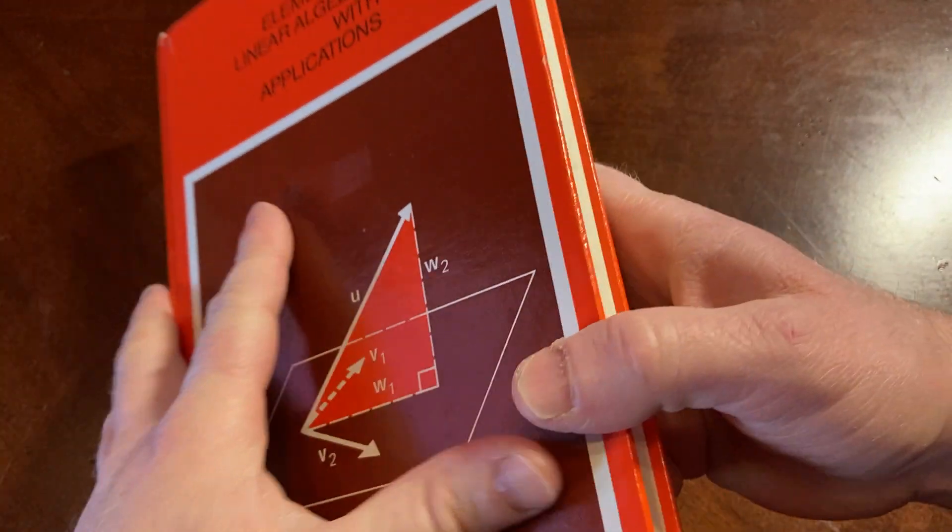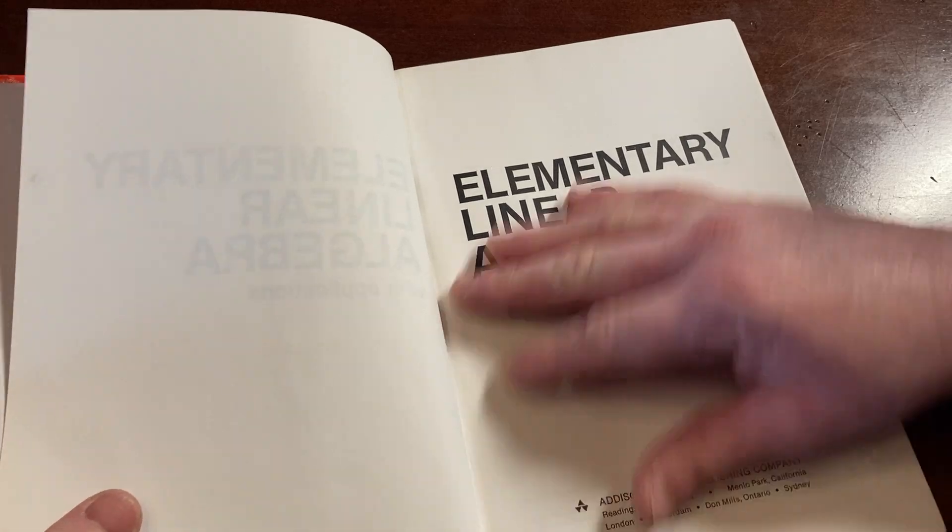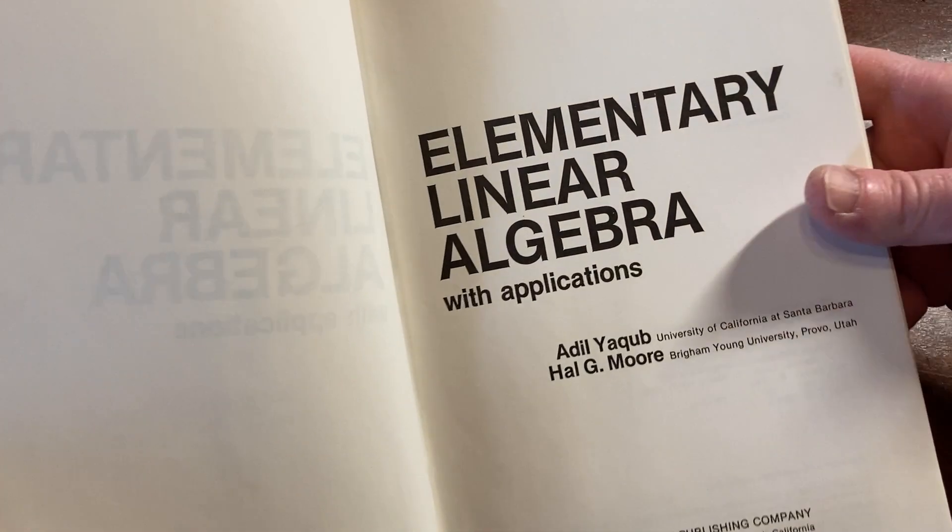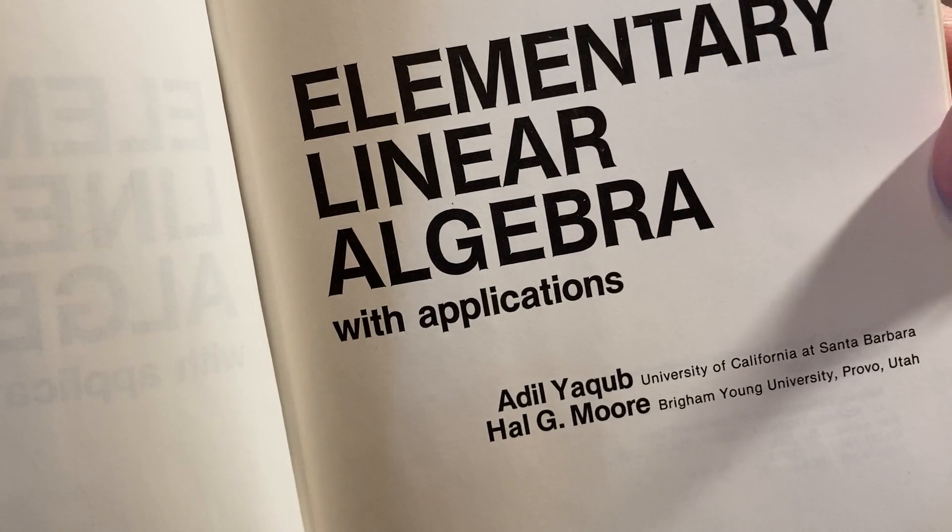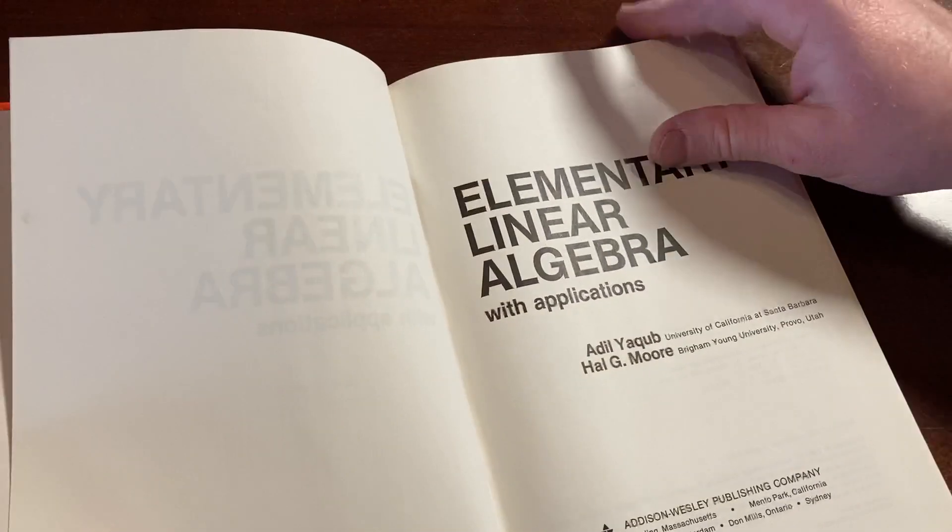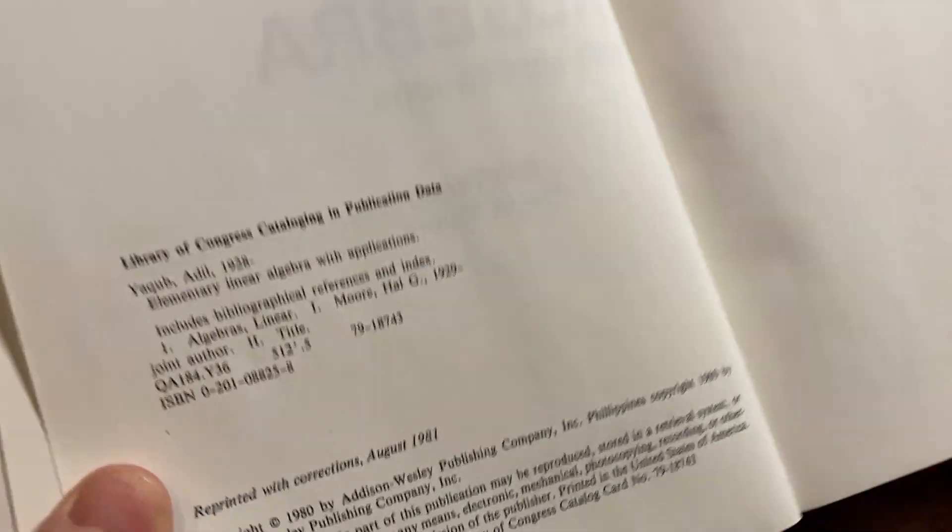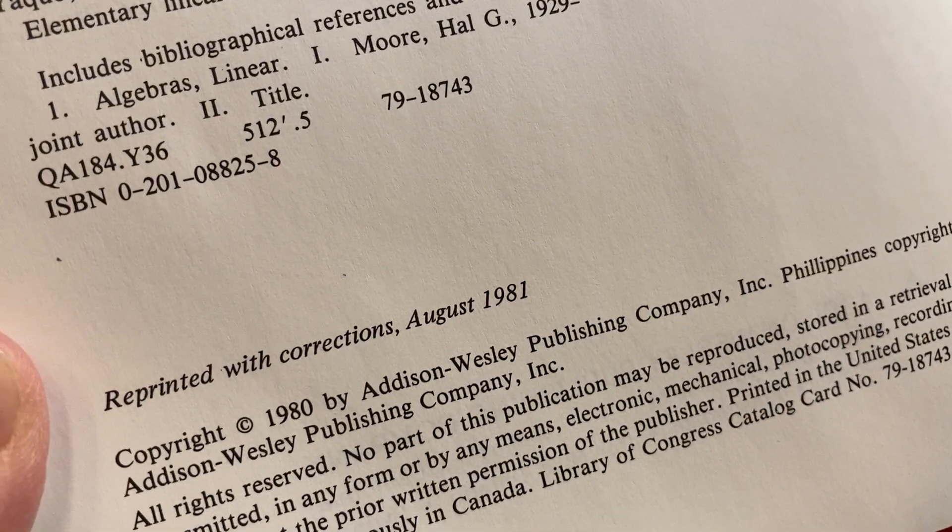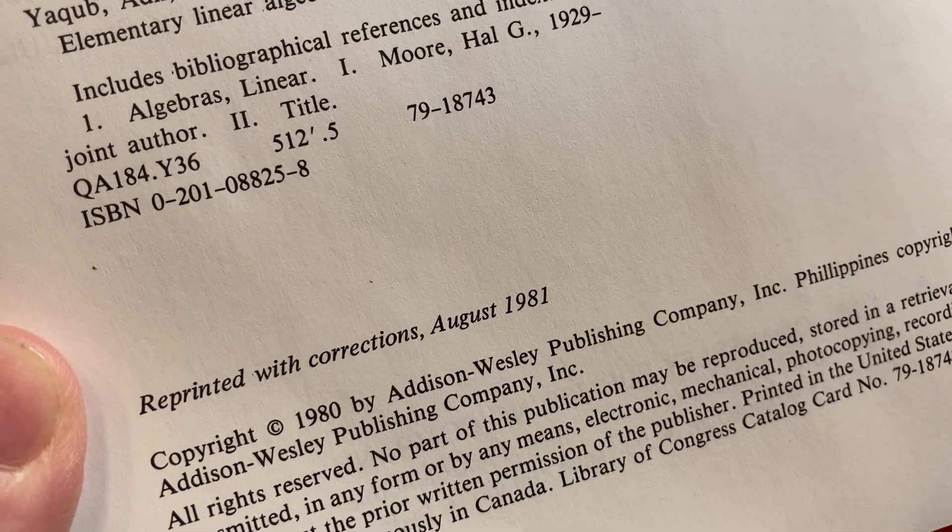Nice book. Let's open it up and take a look at what this book covers. So this is a book that you can use to learn linear algebra, Elementary Linear Algebra with Applications. Copyright 1980, reprinted with corrections, August 81. That was a long time ago.